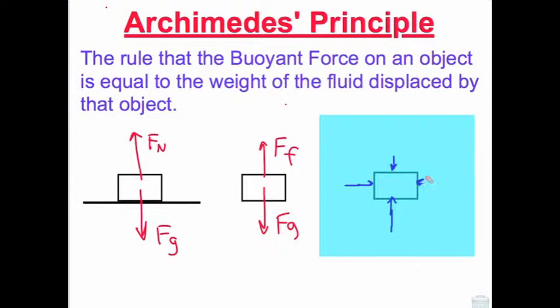The two side pressures cancel out because they are balanced, but the vertical pressures do not cancel out, and we end up with a net pressure pushing upwards. This is called the buoyant force.